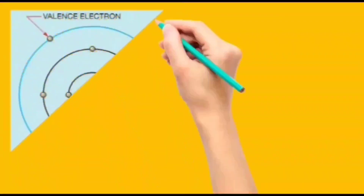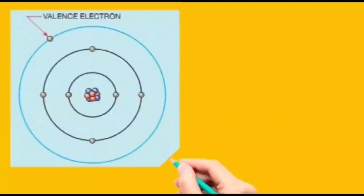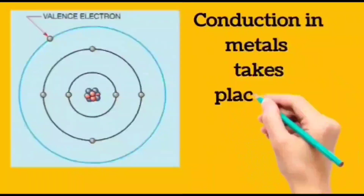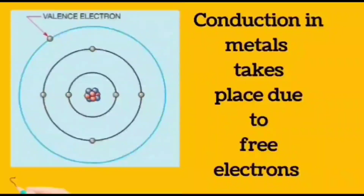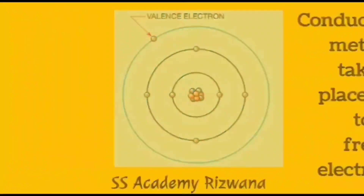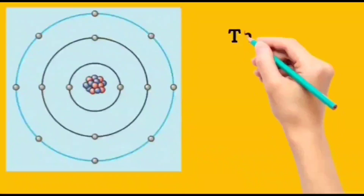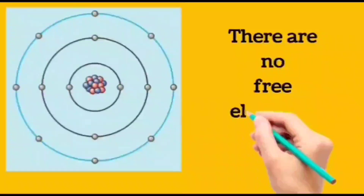To summarize: electric charge can not only exist on an object but can move through it as well. Materials differ vastly in their abilities to allow electric charge to move or be conducted through them. The difference between electrical conductors and insulators is related to their atomic structure.